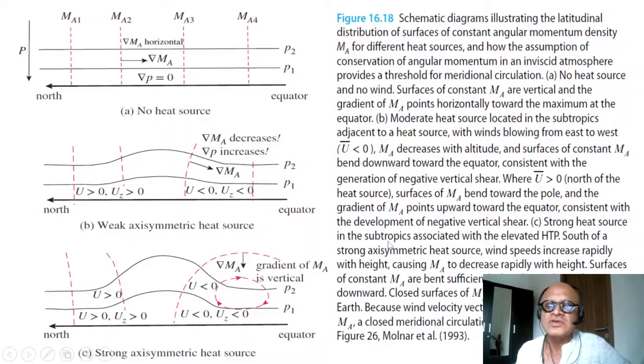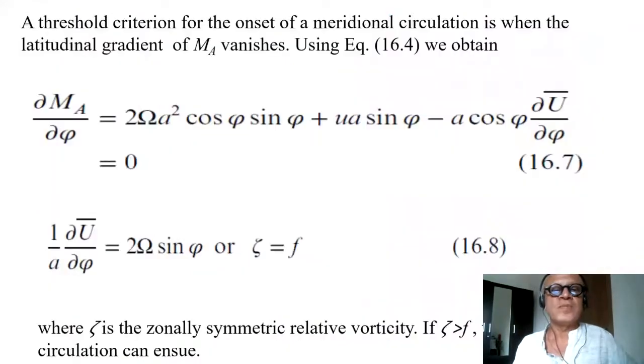In the strong heat source case in the subtropics associated with the elevated Himalayan-Tibetan plateau—this is the most realistic situation. South of a strong axisymmetric heat source towards the equator, wind speeds increase rapidly with height causing Ma to decrease rapidly with height. Surfaces of constant Ma are bent sufficiently that the gradient of M points completely downward towards the surface. Closed surfaces of angular momentum form annuli surrounding the earth. Because the wind velocity vectors lie within the surfaces of constant Ma, a closed meridional circulation is possible.